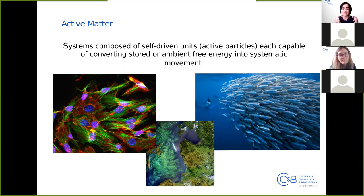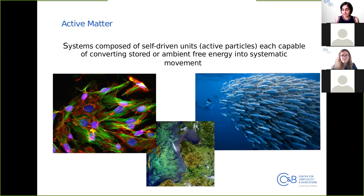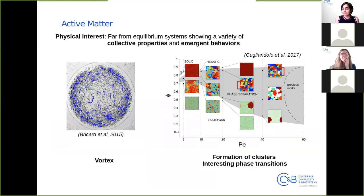By active matter we mean a system composed of self-driven units — active particles — meaning that each particle is able to take energy from the surrounding environment and transform it into systematic movement. This is the case for many biological systems. For example, cells can transform nutrients into movement, algae can transform energy from the sun via photosynthesis to perform their motion and migrate, and a school of fish is an example of active matter because they transform energy from food into movement.